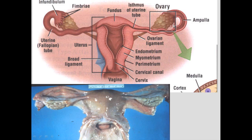The fimbria — you can see the little finger-like projections called fimbrillae — surround the ovary. They have ciliated cells and they coax the egg to go into the infundibulum and finally into the fallopian tube.